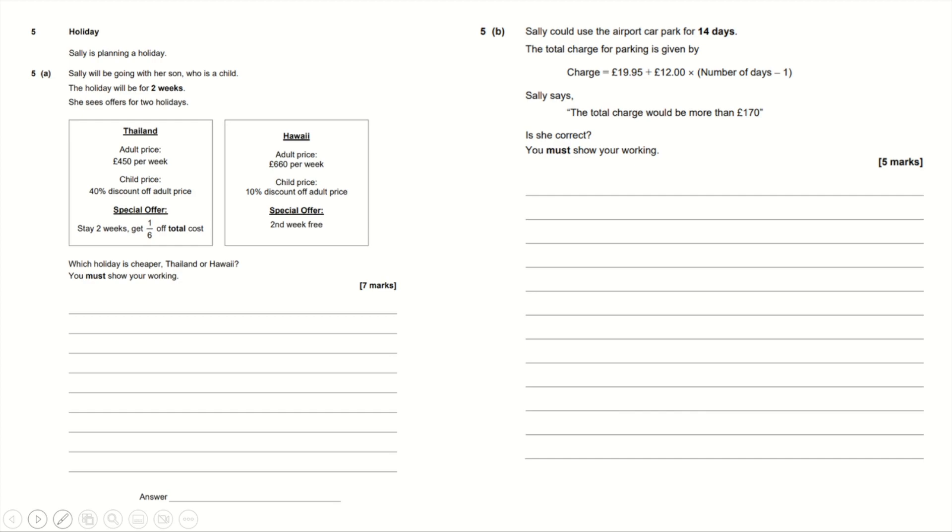Question 5. Sally is planning a holiday. Sally will be going with her son, who is a child. The holiday will be for two weeks. She sees offers for two holidays. Thailand: adult price £450 per week, child price 40% discount off adult price, and there's a special offer: stay two weeks and get one sixth off the price. Or Hawaii: adult price £660 per week, child price 10% discount off full adult price, and the second week is free. So we're going to work this out.